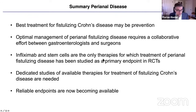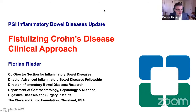In summary: the best treatment for fistulizing Crohn's disease may be prevention. Optimal management requires a combination of gastroenterologist and surgeon. Infliximab and stem cells are the only therapies for which treatment of perianal fistulizing disease has been studied as a primary endpoint. Dedicated studies for perianal disease using this as an endpoint are needed, and reliable endpoints are now becoming available.